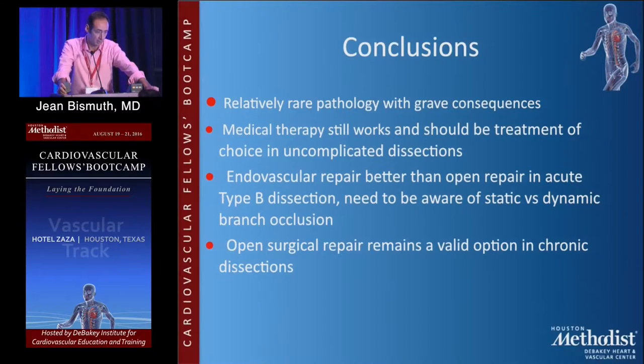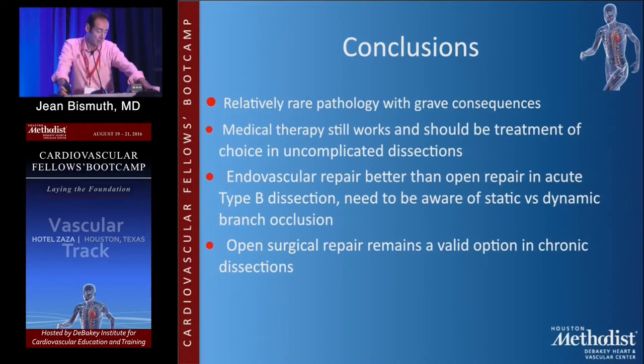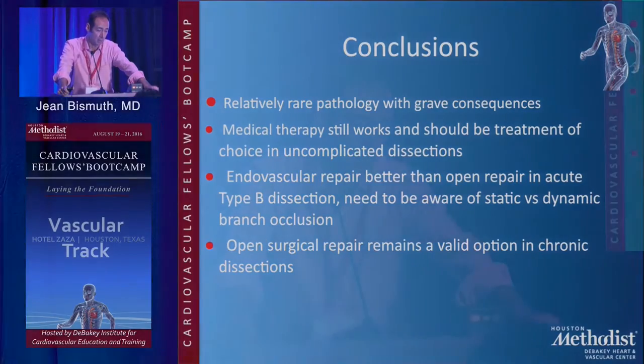In conclusion, aortic dissection is a relatively rare pathology but has grave consequences. Medical therapy is important across the board, including for Type A's. Endovascular repair is better than open repair in acute Type B dissections, but you need to be aware of what's happening in the aorta — there are a lot of moving parts. Use available imaging to improve your diagnosis, and open surgical repair remains an option in chronic dissections. Thank you.